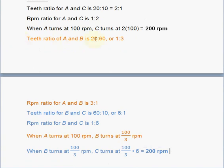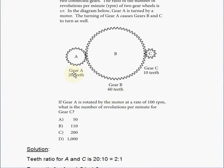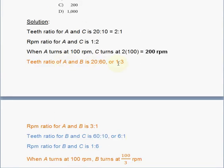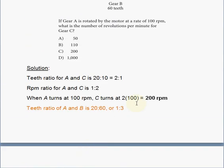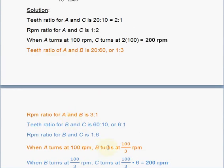Teeth ratio of A and B is 20 to 60, or 1 to 3. So if we divide both sides by 20, we get 1 to 3 ratio. If we divide both of these numbers by 20, the greatest common factor. So the RPM ratio for A and B is 3 to 1, right? We switch sides. 3 to 1. So when A turns at 100 RPM, as a given, B will turn at 100 over 3, divided by 3 RPM. Because the ratio for the RPM is 3 to 1. So if 100 pertains to the 3, then 1 is 1 third of that. That's why we have to divide 100 by 3.